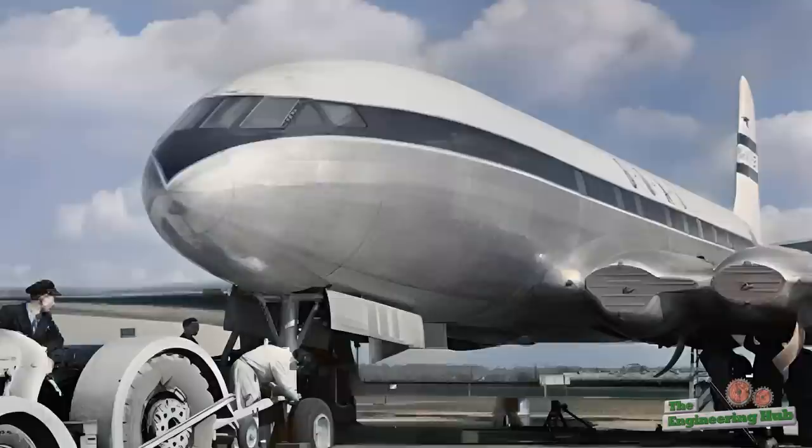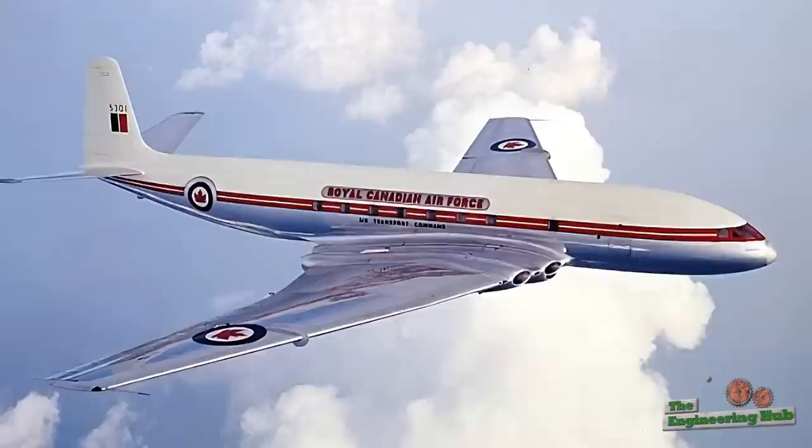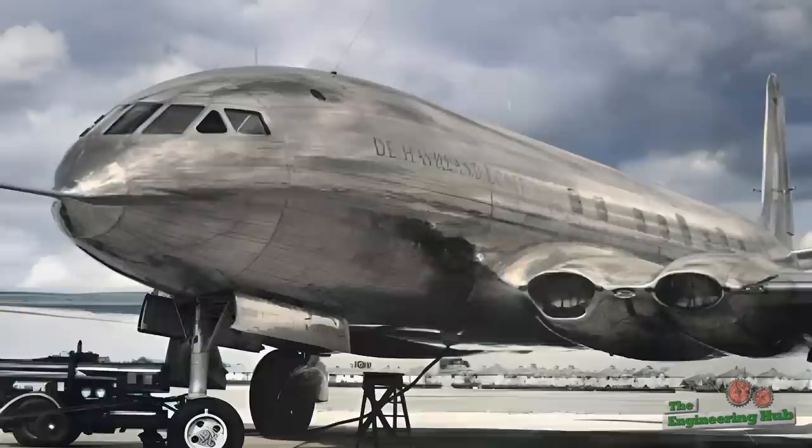Even for today's standards, the de Havilland Comet was absolutely beautiful. It was sleek looking and its jet engines were beautifully integrated into the wings. To bypass the inefficiency of the jet engine, the Comet was designed to fly at an altitude of 10.5km, which was double the cruising altitude of the propeller driven planes operating at the time.